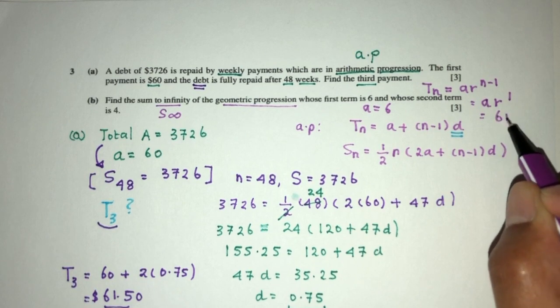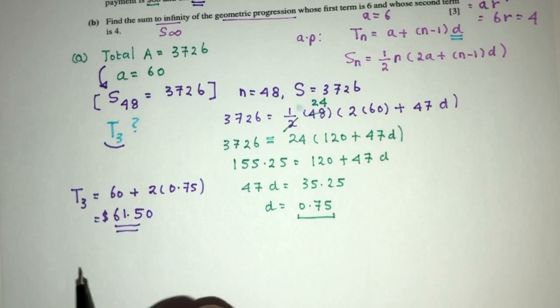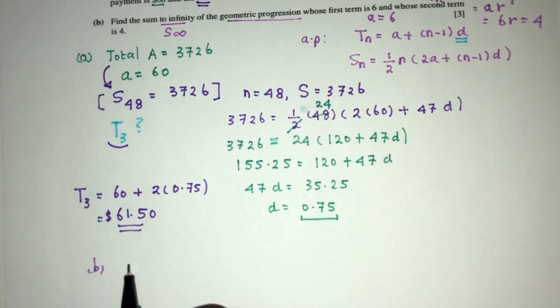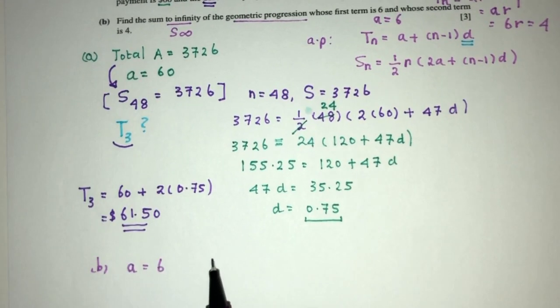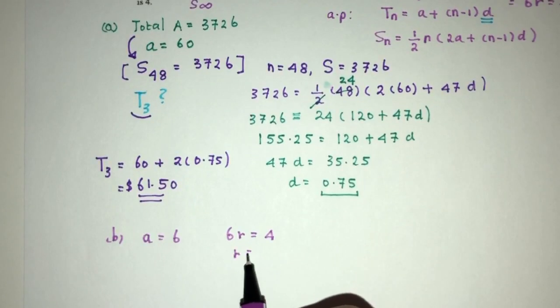A is 6, R. So that will be this. 6R will be the value of 4. So let's write this down. For part B, we're given the value of A is 6, and then 6 times R is 4, which means R will be 2 over 3.